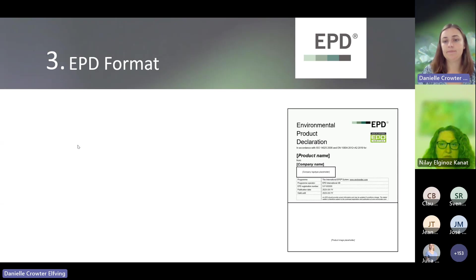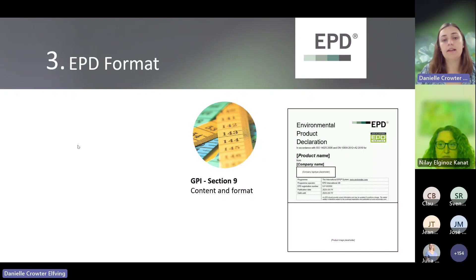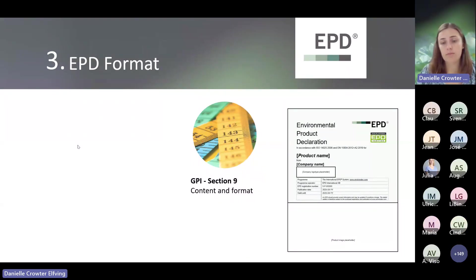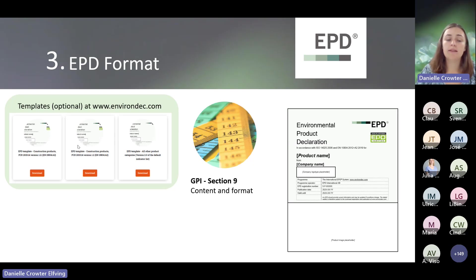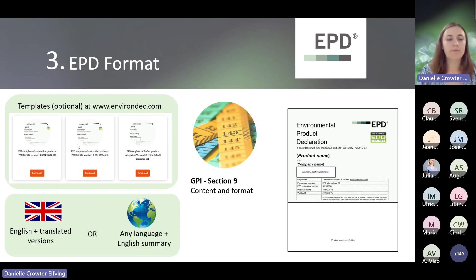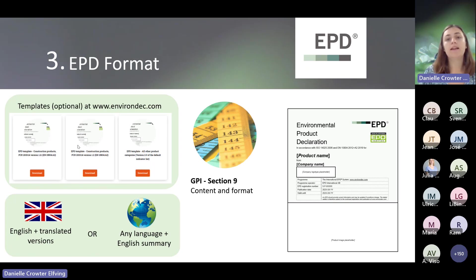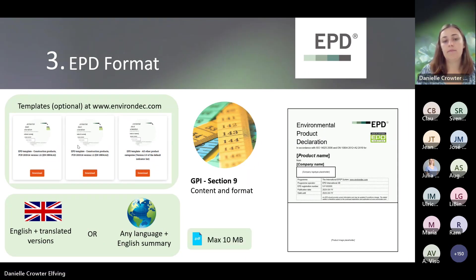Step three — the EPD format. The rules on what should be included in an EPD are defined in Section 9 of our General Programme Instruction, so if you wish to read that more closely, you're welcome. We also have templates available on our website — these are optional, but they can serve as a good guideline for what the EPD can look like and what should be included. For languages, the EPD has to be available to some extent in English. Either you can publish the original EPD in English and then publish as many translated versions as you want, or you can publish in any other language, but there should always be an English summary. Also, the PDF should be no larger than 10 megabytes.